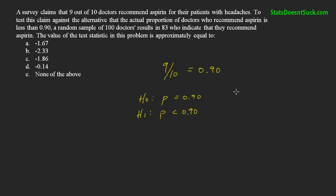A random sample of 100 doctors results in 83 who indicate that they recommend aspirin. So we have a sample size n equals 100 and 83 successes. We can work out our sample proportion, which is x over n: 83 over 100, which equals 0.83.